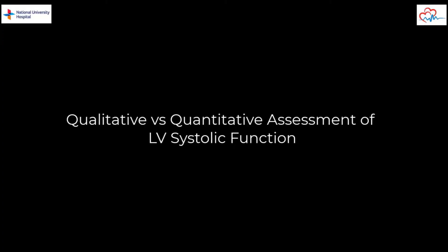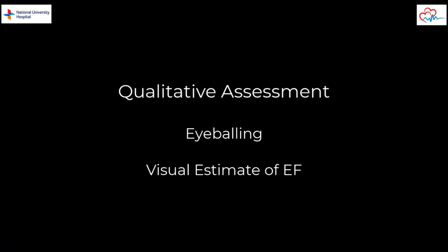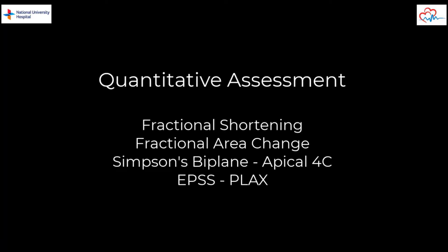Qualitative assessment of the LV involves eyeballing, or getting a visual estimate of LV systolic function. This is a commonly used method to determine LV function. It is usually quite easy to differentiate between a LV with good EF and one with severe systolic dysfunction. Eyeballing however becomes difficult when we are faced with left ventricles with mild or moderate dysfunction. It may be difficult to accurately grade these ventricles, especially if one is new to echo. We can use several quantitative methods to better grade LV systolic function. These methods are straightforward to perform and have good reliability and reproducibility.